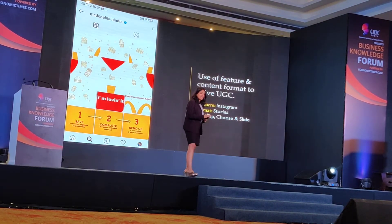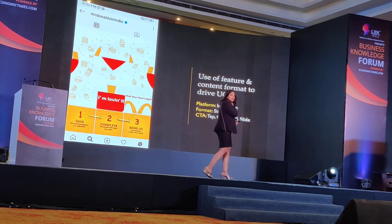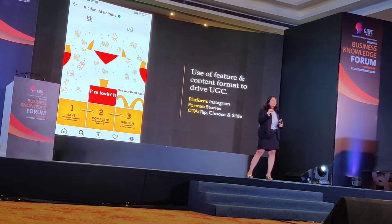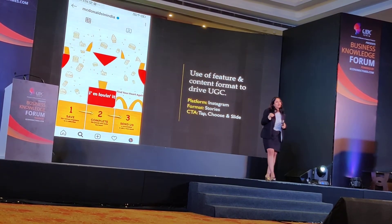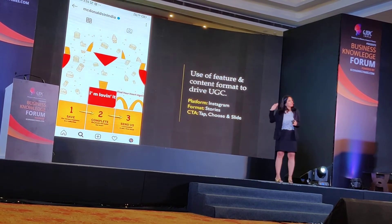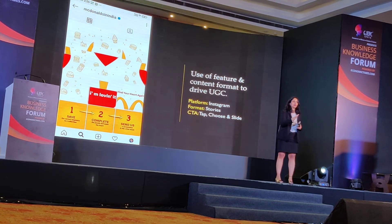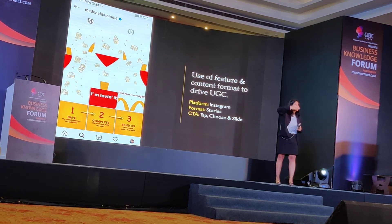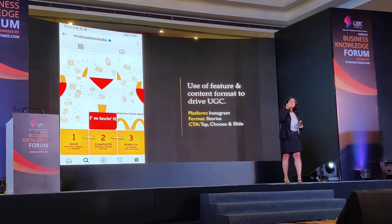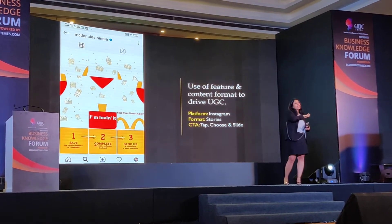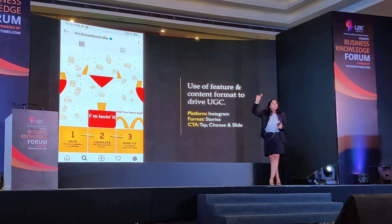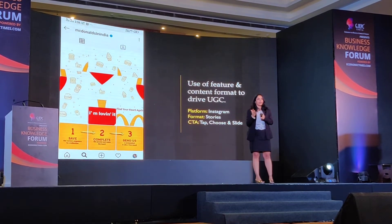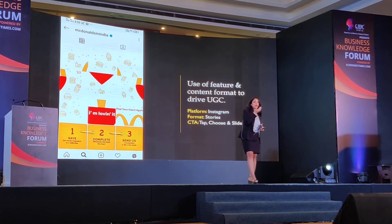Here is another simple but interesting example on the importance of using features already available within the social media environment. On Instagram you have something called Wish List — when you like something while scrolling, you mark it as wish list, and after a while you can go back to the wish list section and see all those things appear in a grid.